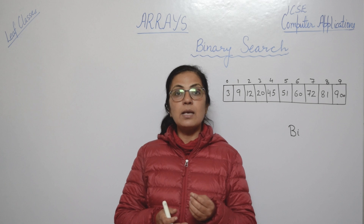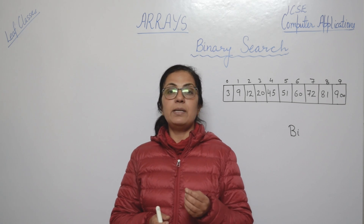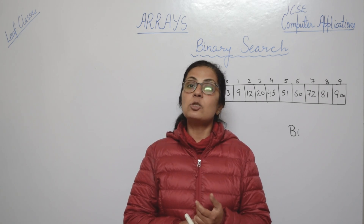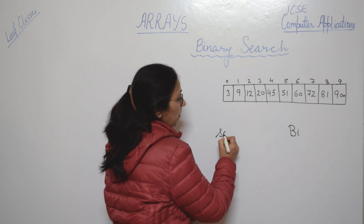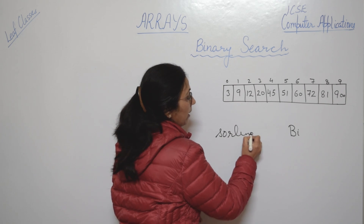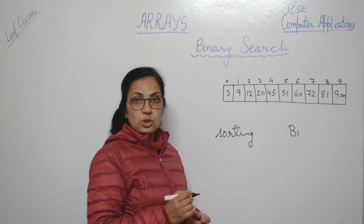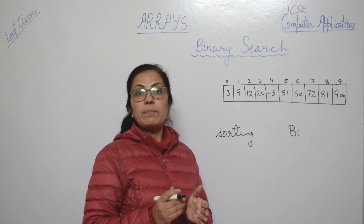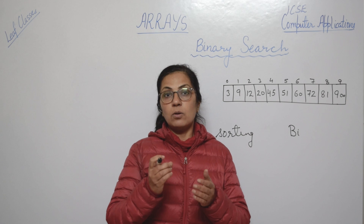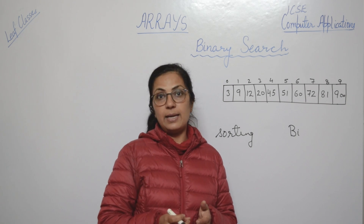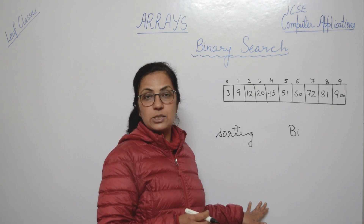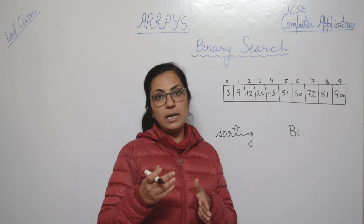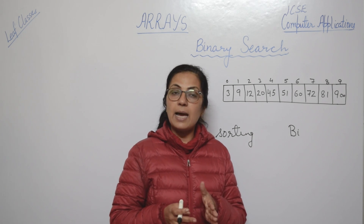For binary search, the main condition is that the array elements in which you want to search for a number should be in sorted order. Sorting means arrangement either in ascending order or in descending order. The array you are getting in your question for binary search technique has to be in sorted order, maybe ascending or maybe descending.